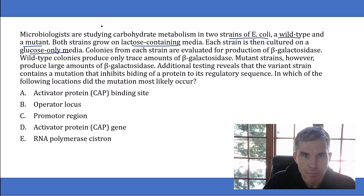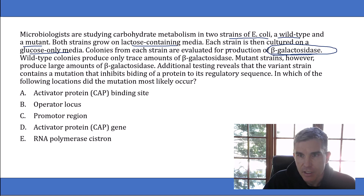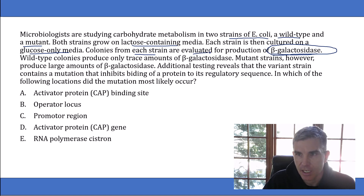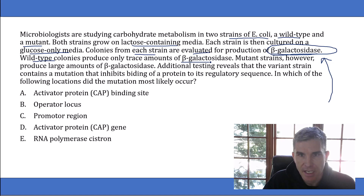Colonies from each strain are evaluated for production of beta-galactosidase. To answer this question, you have to know that beta-galactosidase is one of the enzymes required to metabolize lactose. So what they're telling you is that colonies are being evaluated for whether or not the lac operon has been turned on — and you have to have memorized that this is an enzyme used to metabolize lactose. The wild type normal colonies produce only trace amounts of beta-galactosidase.